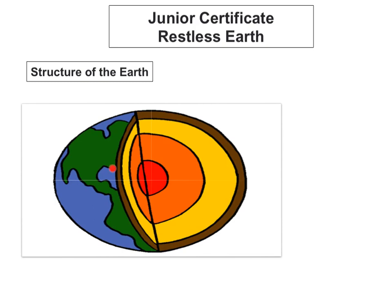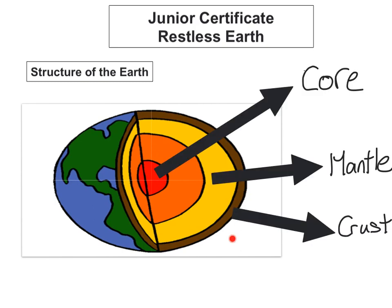The first thing we're going to look at is the structure of the earth. The earth is made up of four layers: the crust, the mantle, the outer core, and the inner core. For your Junior Certificate examination, you just need to know the crust, the mantle, and the core.